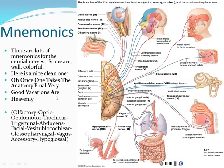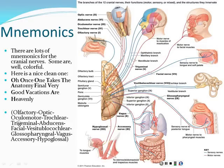Mnemonics for cranial nerves abound — a clean one is 'Oh, once one takes the anatomy final, very many patients are heavenly,' giving the first letter of each nerve in order: Olfactory, Optic, Oculomotor, Trochlear, Trigeminal, Abducens, Facial, Vestibulocochlear, Glossopharyngeal, Vagus, Accessory, Hypoglossal. Google cranial nerve mnemonics for more options, some clean and some not.